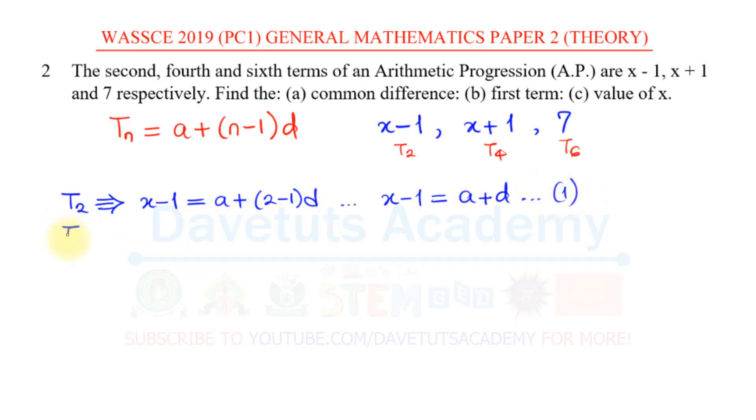So for the 4th term T4, we have been given the 4th term as x+1, so this is x+1 is equal to, using this formula again, we have a + n is 4 because we are looking at the 4th term, so I'm going to have 4-1 multiplied by d. If I simplify that, that means x+1 = a, 4-1 is 3, so I have plus 3d. I can call this the 2nd equation.